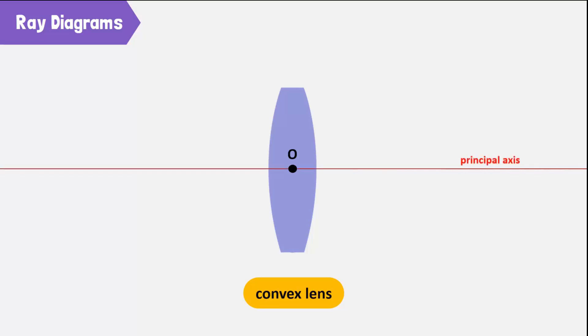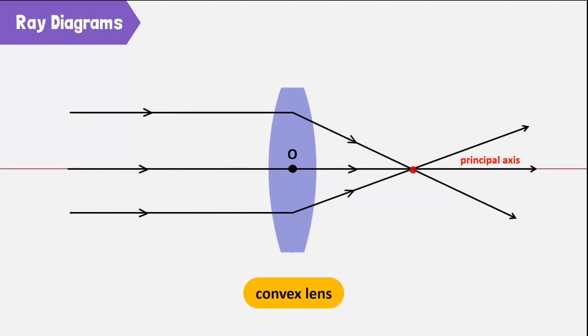The horizontal line passing through the optical center is the principal axis. When the rays of light traveling parallel to the principal axis pass through a convex lens, they converge at a single point on the principal axis.